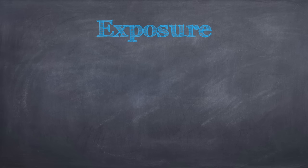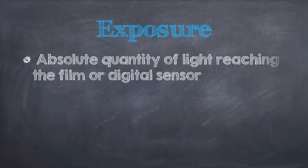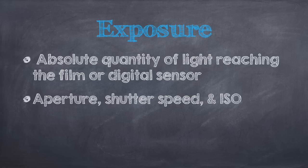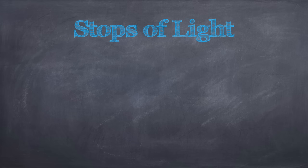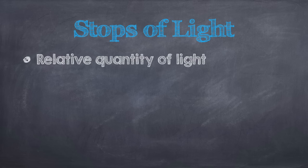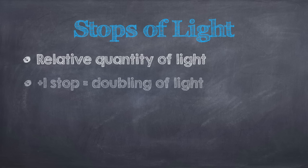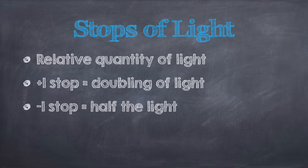To understand the latitude that Fujifilm Velvia has in recording light, let's first define a few terms. Exposure is the absolute or maximum quantity of light that reaches the film plane or digital sensor. The exposure is controlled by manipulating the combination of aperture or f-stop, shutter speed, and the choice of ISO. Photographers typically talk about manipulating exposure in terms of stops. A stop of light is simply a relative or given quantity of light that contributes to the exposure. Each increase in the stop of light doubles the relative quantity of light, while each decrease halves it.